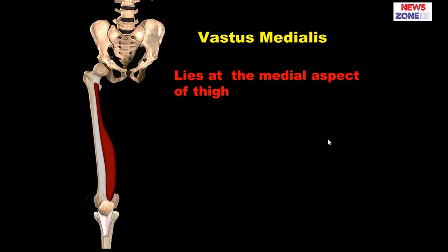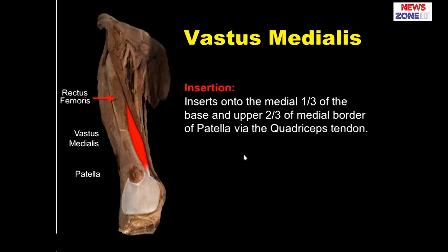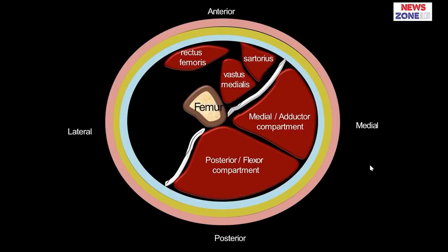The vastus medialis is placed on the medial aspect. Its origin is from the lower part of the intertochanteric line, the spiral line, medial lip of the linea aspera, and upper one-fourth of the medial supracondylar line. The intertochanteric line continues to the posterior aspect as the spiral line, which is the medial border of the gluteal tuberosity, then to the medial lip of the linea aspera and the upper one-fourth of the medial supracondylar line. The insertion is at the medial one-third of the base and upper two-thirds of the medial border of the patella via the quadriceps tendon. We place the vastus medialis just at the lateral aspect of the sartorius and behind the rectus femoris.